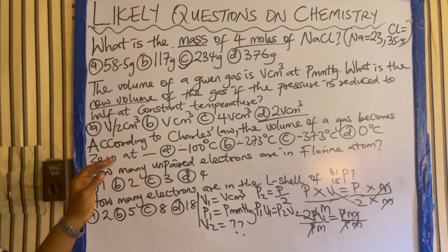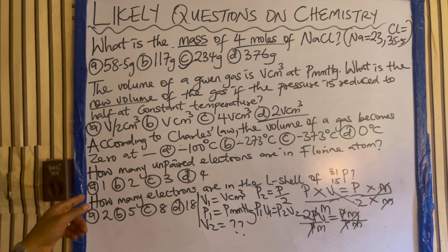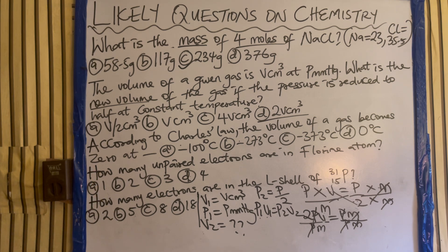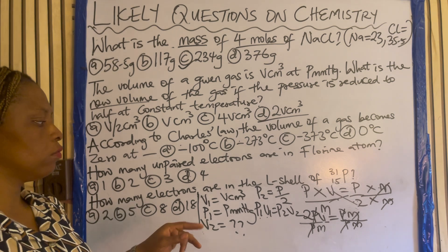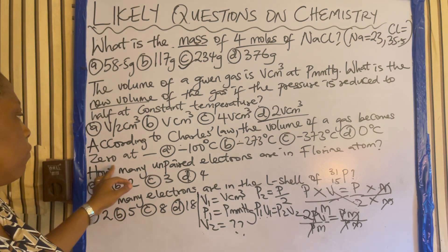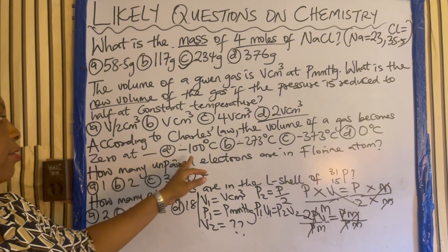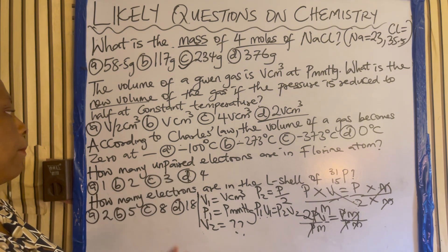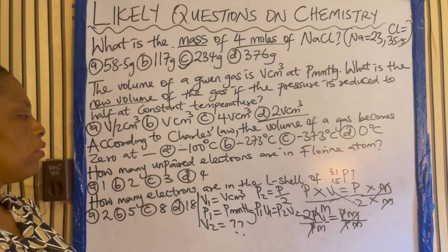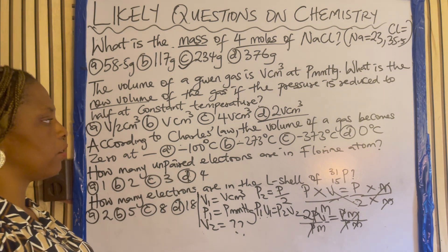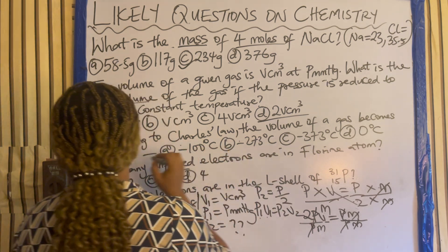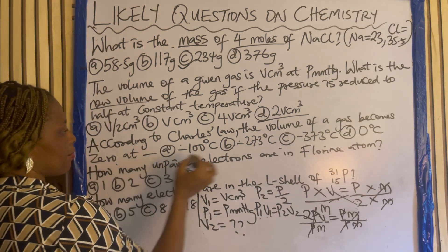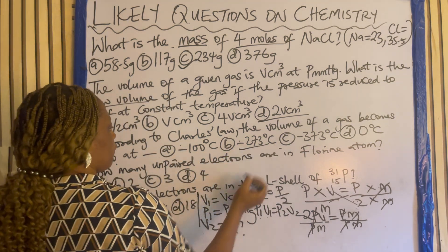According to Charles' law, the volume of a gas becomes zero at — minus 100, minus 273, minus 373, or zero? It becomes zero at minus 273°C.